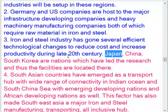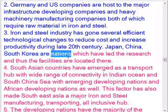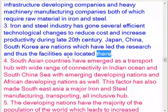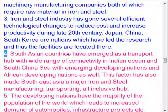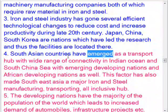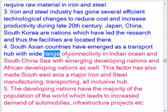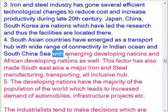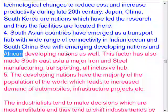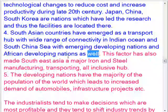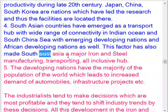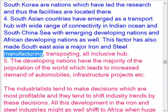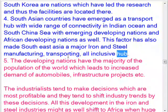Factor 3: The iron and steel industry has gone through several efficient technological changes to reduce cost and increase productivity during the late 20th century. Japan, China, and South Korea are nations which have led the research, and thus the facilities are located there. Factor 4: South Asian countries have emerged as a transport hub with wide range of connectivity in the Indian Ocean and South China Sea, making Southeast Asia a major iron and steel manufacturing and transporting hub.